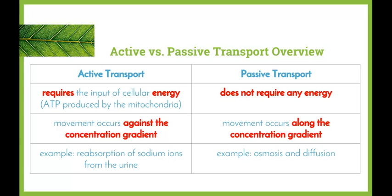Passive transport does not require any energy, as movement occurs along the concentration gradient — from an area of high concentration to an area of low concentration. Some examples we've talked about extensively through Year 11 and so far in Year 12 are osmosis and diffusion.